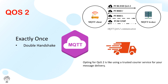QoS 2 is a very solid and robust way of message transfer — it's 'exactly once.' The message will be sent to the broker exactly one time. It's a double handshake method: the message goes from client to broker, the broker sends an acknowledgement that it received the message, the client then sends a confirmation, and finally the broker says it has received the message and tells the client to stop — don't send this particular message again.